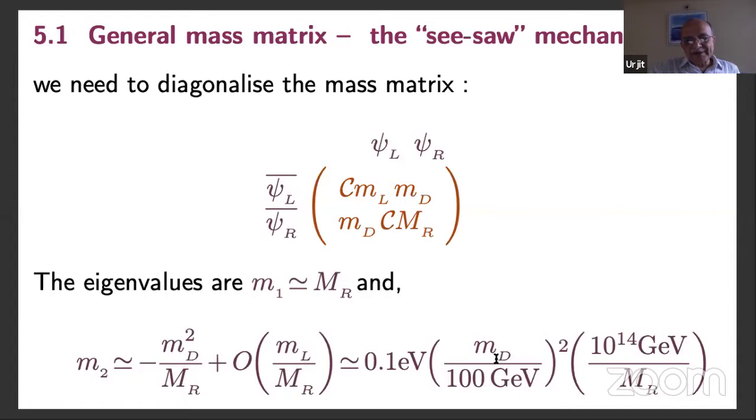One eigenstate is the very large mass mr which would be super heavy and not observable now. The other one would be observable. It would have a much lighter mass value and we can rewrite this md squared over mr by scaling them with respect to a typical dirac mass which comes from the standard model. So standard model mass scale is determined by w and z masses. So it is about 100 GeV. So md squared, if it is measured in 100 GeV, then to get m2, the light neutrino to work out to be 0.1 electron volt, you would get the second eigenvalue m2 to be 0.1 eV provided the right-handed neutrino was at 10 to the 14 GeV.